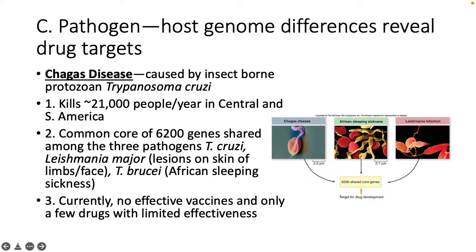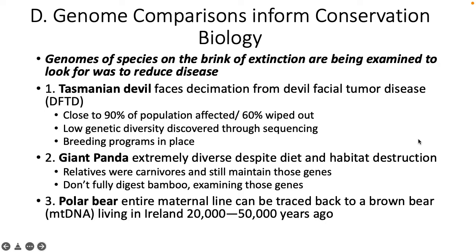Host genome differences also reveal drug targets for the disease Chagas, caused by a protozoan, which kills about 21,000 people per year in Central and South America. The common core of 6,200 genes is shared among three pathogens: T. cruzi, Leishmania major, and T. brucei. Currently there are no effective vaccines and only a few drugs with limited effectiveness, but all share some core genes — so if we find one gene that affects one pathogen, maybe it will help cure the others.